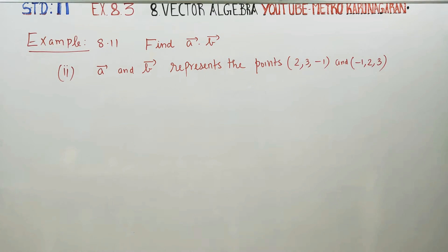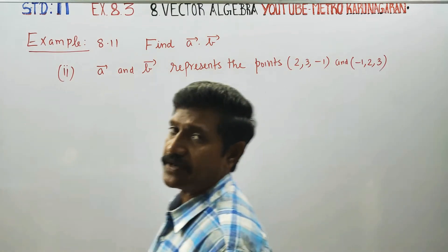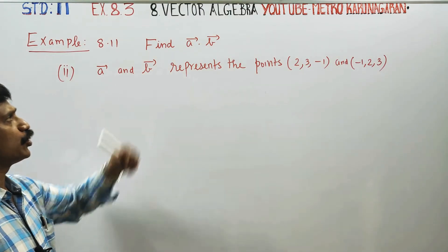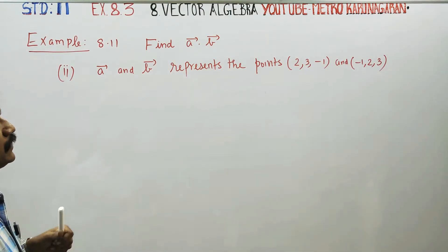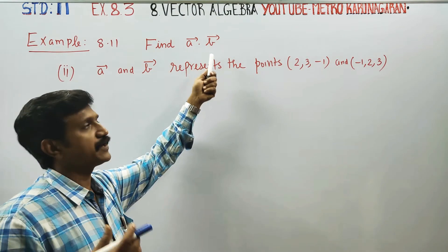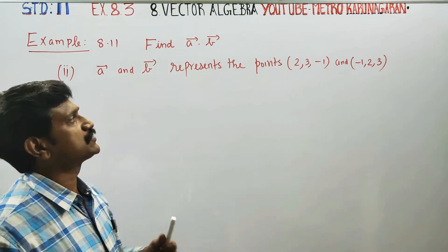Hello 11th standard students, I am Retro Karanagaran. In example 8.11, second substitution, you have to find the value of A dot B. This is called dot product — multiplication by means of dot.